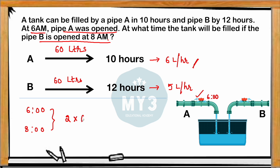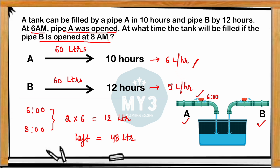In those 2 hours, pipe A fills 2 × 6 = 12 liters. Out of 60 liters, 12 liters are already filled by pipe A. At 8 AM, pipe B also opens, so now both A and B are working. The remaining tank is 60 − 12 = 48 liters, to be filled by both A and B. A fills 6 liters/hour and B fills 5 liters/hour.